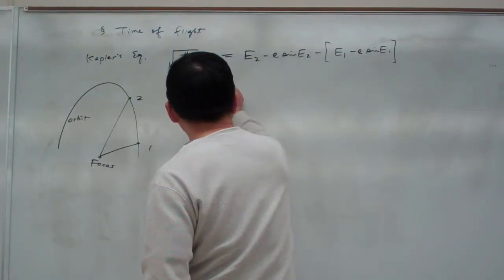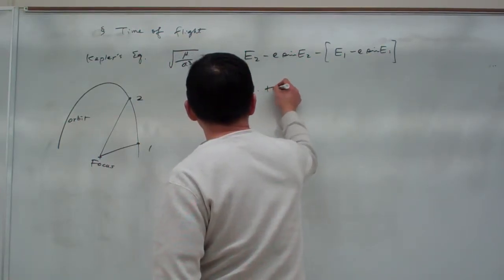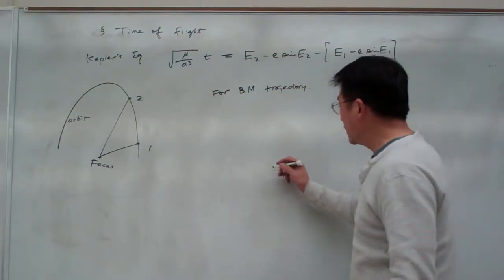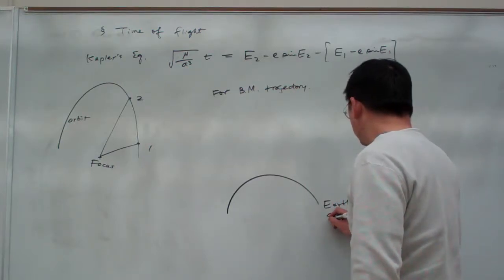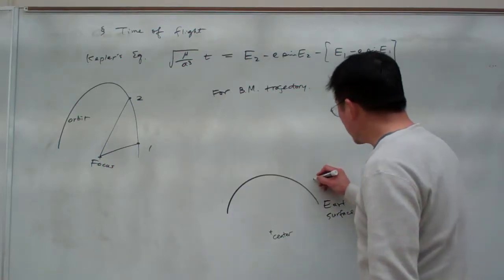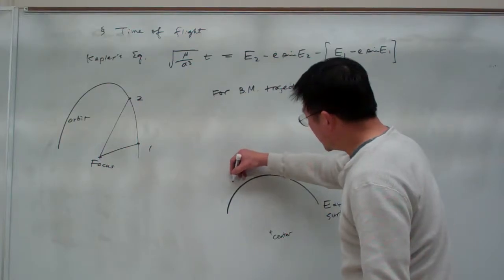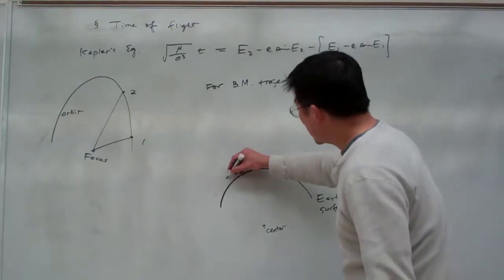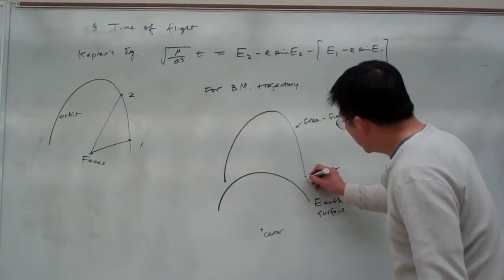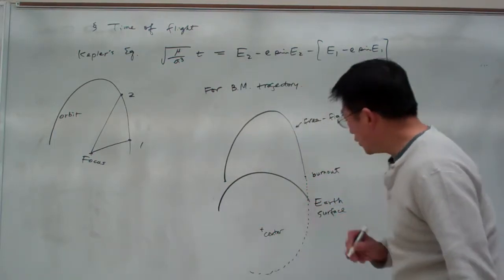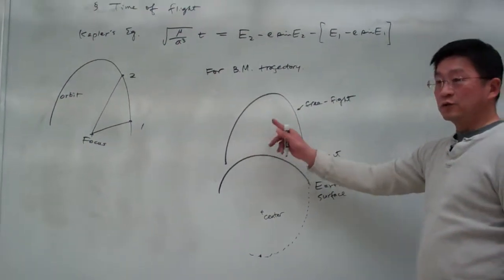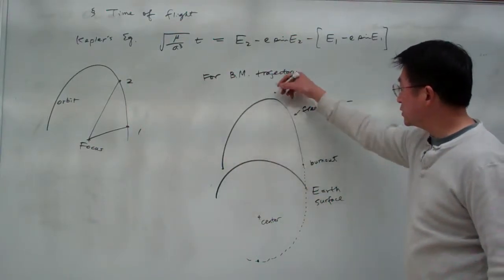For our ballistic missile trajectory, this is Earth's surface, and this is the center, which is the major focus of the orbit. This is the burnout point, and this is reentry. Reentry and burnout don't have to be symmetric. This is our free flight. Continuing with the dashed line to form our orbit — this is perigee. The time of flight in free flight, and we're assuming this portion is symmetric.